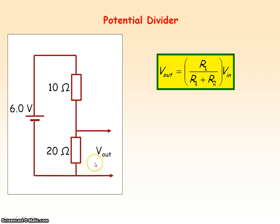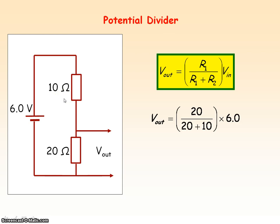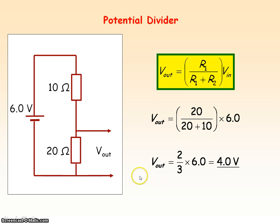So if we wanted to determine the voltage output across the 20 ohm resistor, in this case R1 would be 20 ohms and R2 would be 10 ohms. The voltage output would be 20 ohms divided by the total of 30 ohms, times by the input voltage of 6.0 volts, giving a voltage output of 4.0 volts. If there's 4.0 volts across the 20 ohm resistor and the total voltage is 6.0 volts, then there is 2.0 volts across the 10 ohm resistor. So the ratio of the resistances was 1 to 2 and so the ratio of the voltages is 1 to 2.